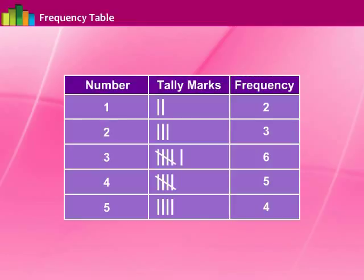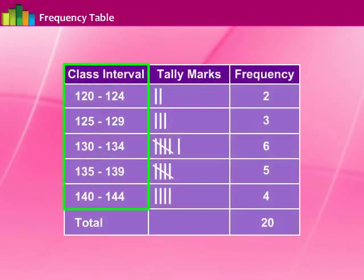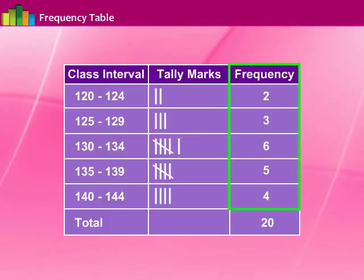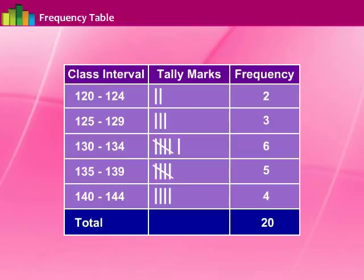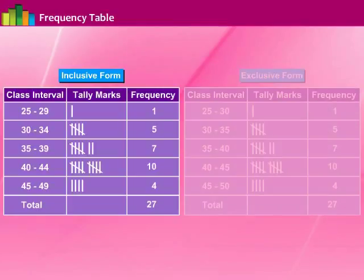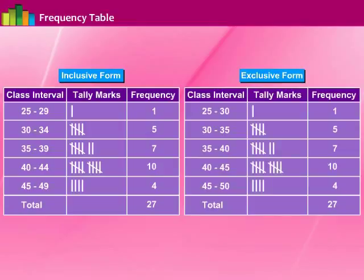If the values of the variable are given using different classes and the frequencies are marked against the respective classes, we get a frequency distribution. All the frequencies are added and the number is written as the total frequency for the entire intervals. This must match the total number of data given. This process of forming a frequency table is called tabulation of data. Have a look at the frequency table in an inclusive form and an exclusive form.